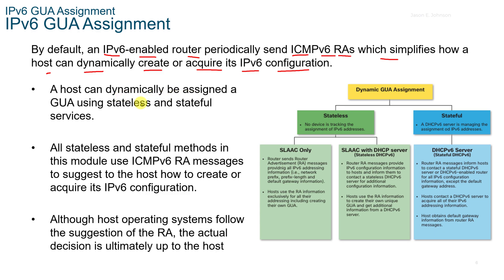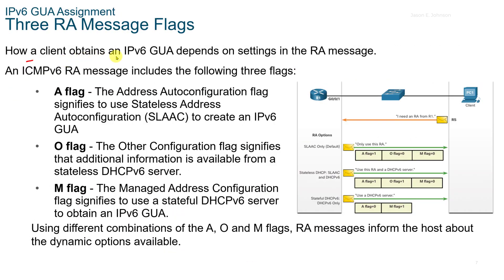A host can dynamically be assigned a GUA using stateless or stateful services. All stateless and stateful methods in this module use the ICMP RA messages to suggest to the host how to create or acquire its V6 configuration. Although host operating systems follow the suggestion of the RA, the actual decision is ultimately up to the host. How a client obtains a V6 GUA depends on the settings in the RA message.